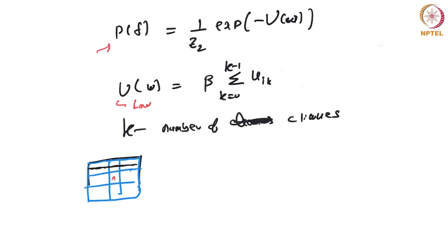If U is low when there is an edge around the center pixel, then P(F) will be higher. Having an increased potential whenever the clique pixels have the same value as the center pixel leads to very strong edges. This is the Markovian assumption, where each neighborhood is treated independently.